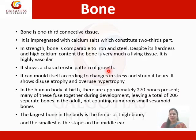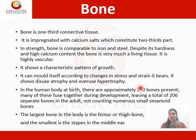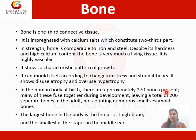The bone is full of blood supply. It shows a characteristic pattern of growth. A bone is responsible for increasing the length of the body. It can mold itself according to change in stress and strain it bears. The bone can change shape as it shows diffuse atrophy — if we cannot use a part of the bone for a long term, the bone shows atrophy.